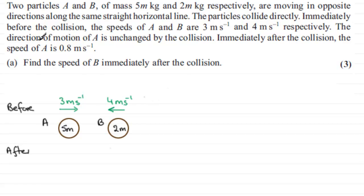Now the direction of motion of A is unchanged by the collision, so clearly that's going to be moving in that direction towards the right there. We're told that the speed of A is 0.8 meters per second. Well, the speed is the magnitude of the velocity, so this is going to be moving at 0.8 meters per second.